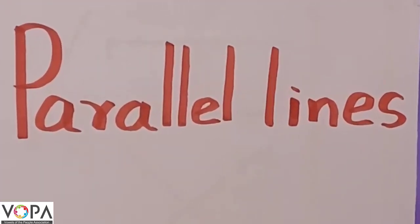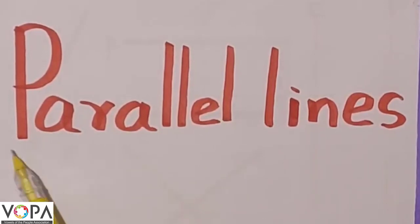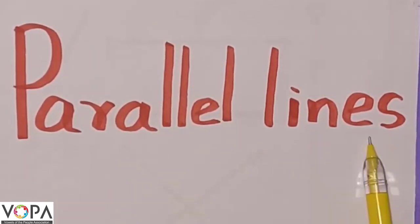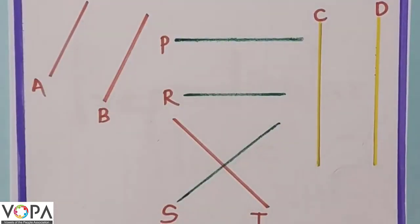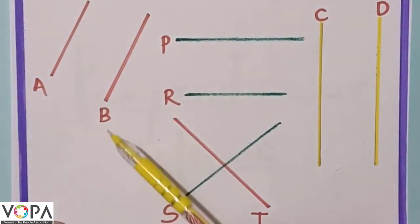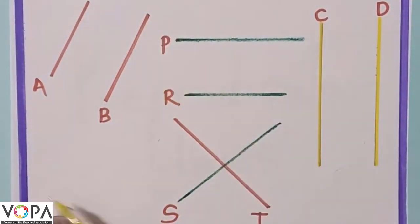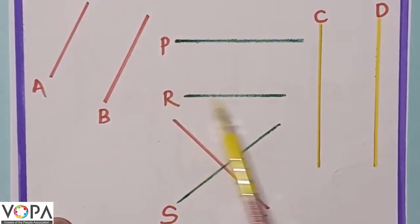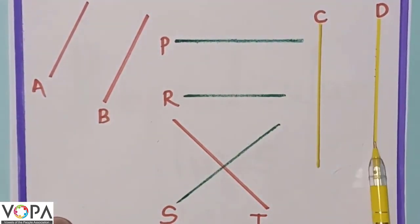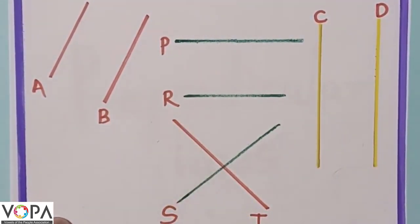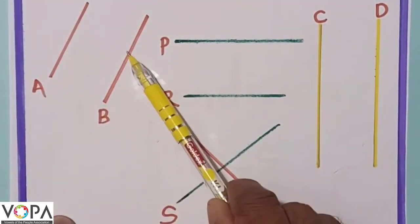Hello friends, today we are going to learn parallel lines. Look at these lines: line A, line B, line P, line R, line C, line D, line S, and line T. Look at line A and line B.